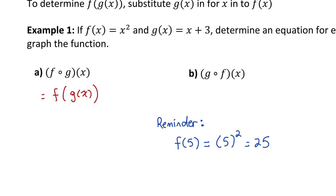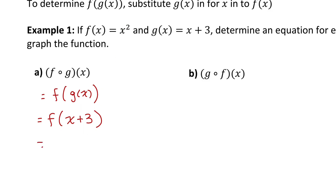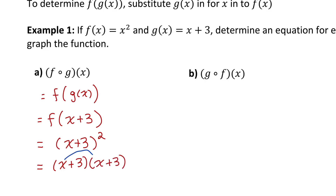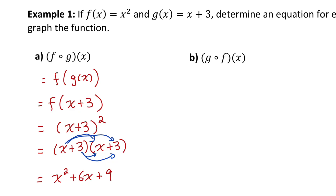What we're trying to figure out here is function f when the input is g of x. And remember, g of x is x plus 3. So I can replace g of x with what it's equal to — x plus 3 is the input that must go in for x into the f of x function. So I'll just replace the x with x plus 3, making the composite function become x plus 3 squared. We could leave that in factored form, or expand it. x plus 3 squared means two factors of x plus 3 multiplied together.